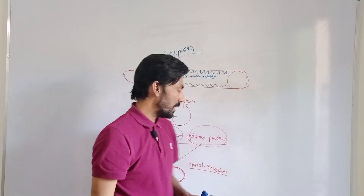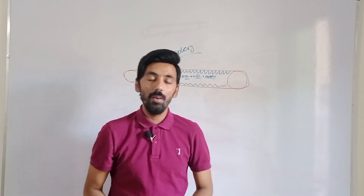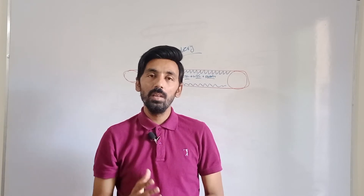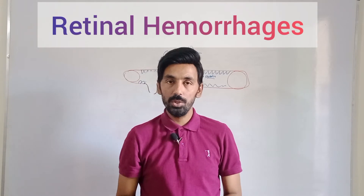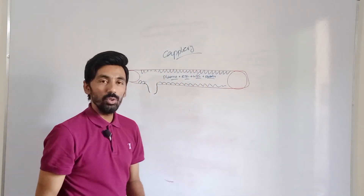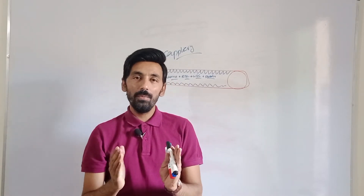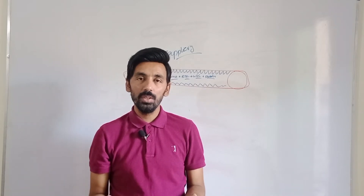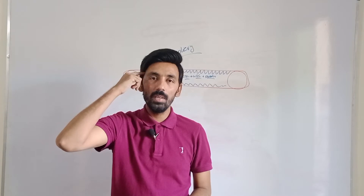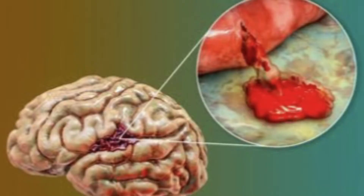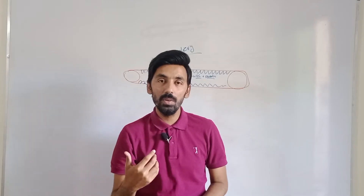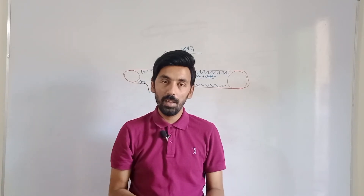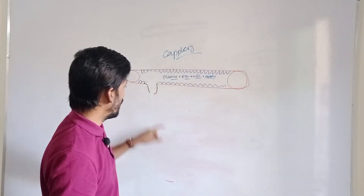Now we will learn about another form of microvascular leakage: retinal hemorrhages. A hemorrhage occurs when blood comes out into any body tissue. If red blood cells come out into the retina from the retinal blood vessels, it causes retinal hemorrhages.